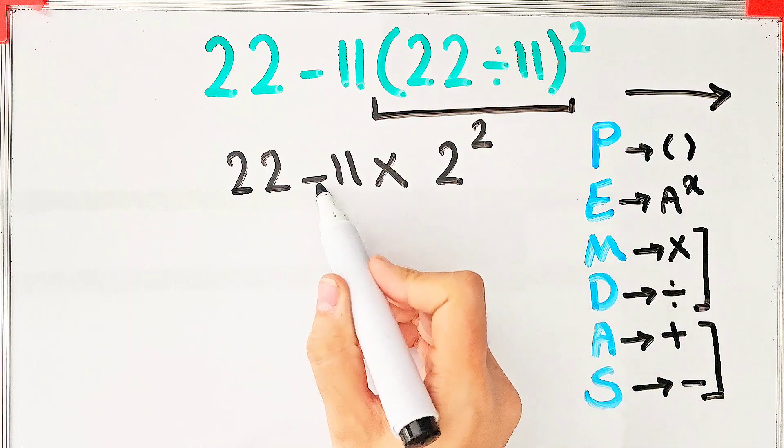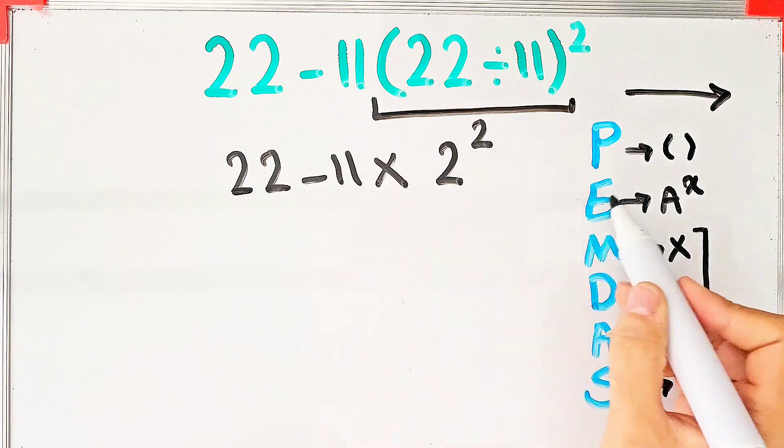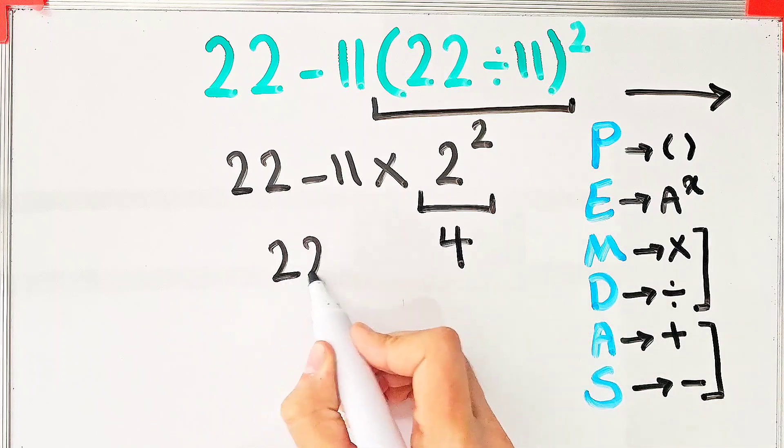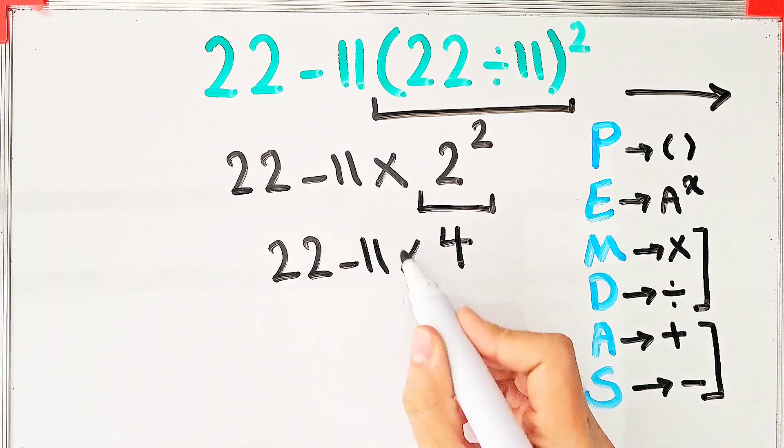We have subtraction, multiplication, and exponent. First we simplify this exponent. 2 to the power of 2 equals 4. 22 minus 11 times 4.